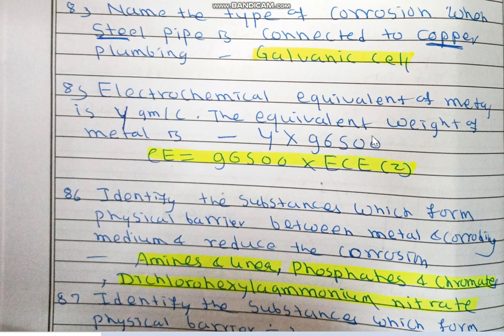The electrochemical equivalent of a metal is Y grams per coulomb. The equivalent weight of the metal is Y × 96,500.